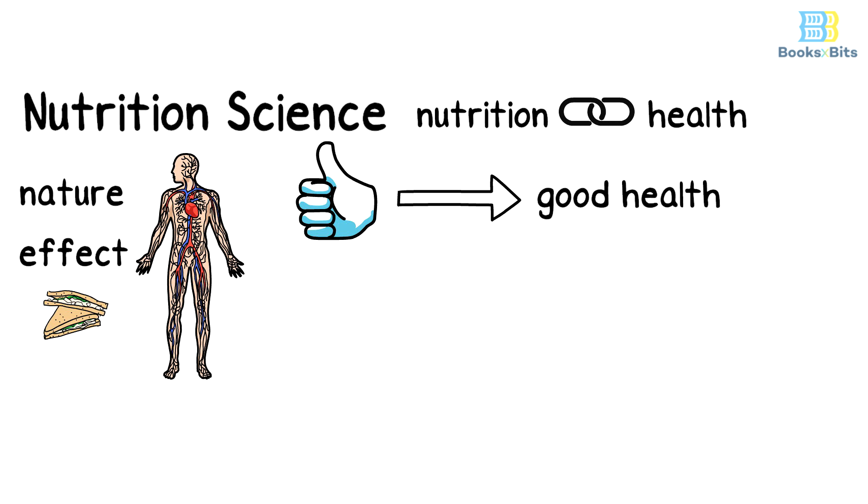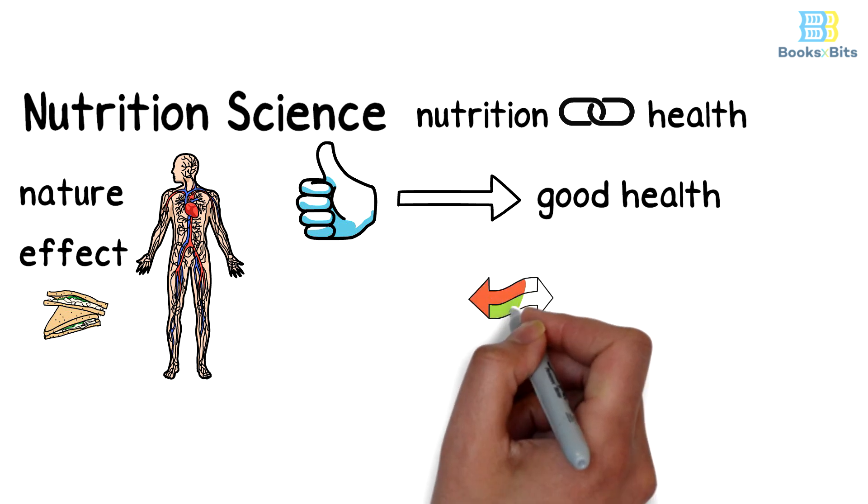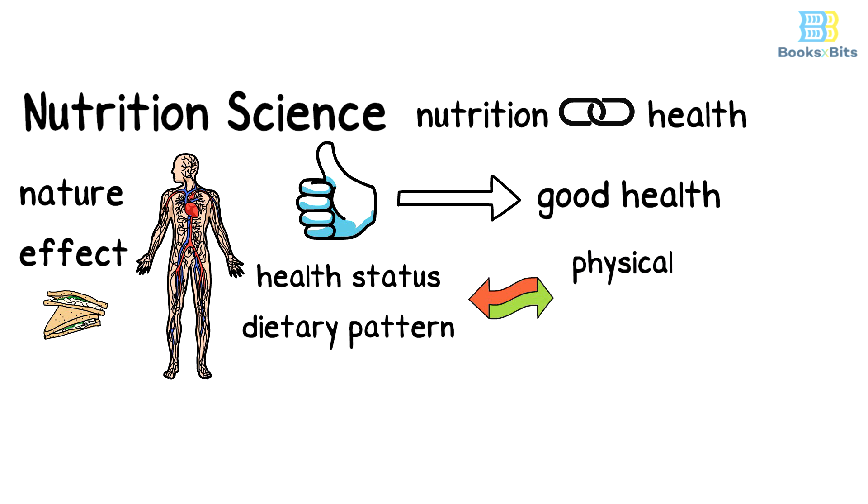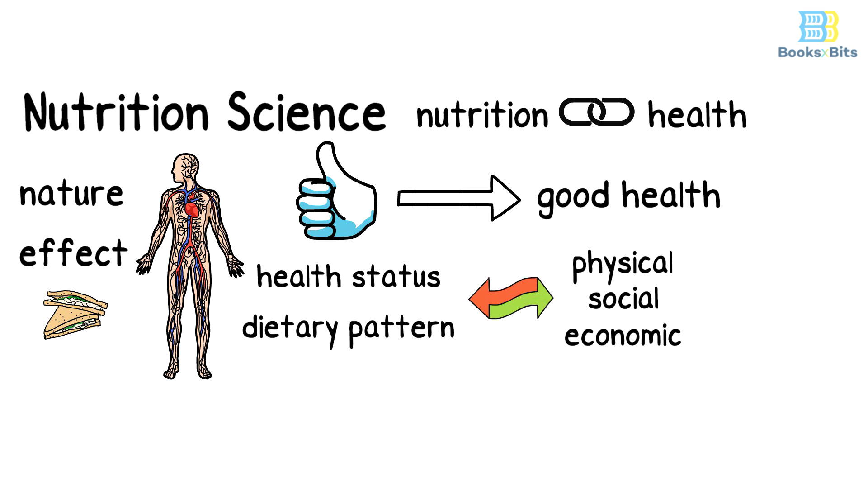to enjoy good health, which is the result of the mutual influence between health status, dietary pattern, and the physical, social, and economic environment. In order for a person to be well-nourished, he must obtain a balanced